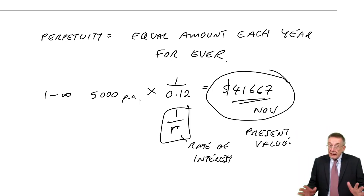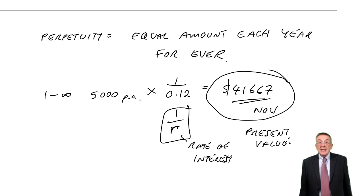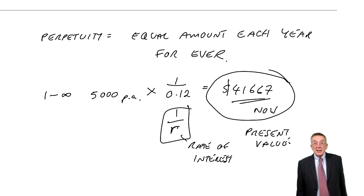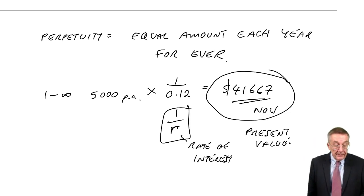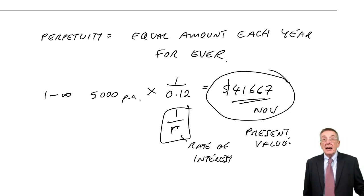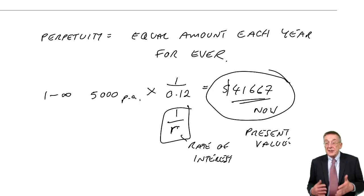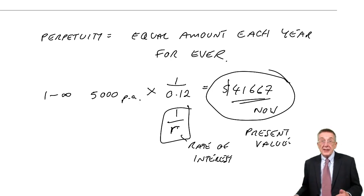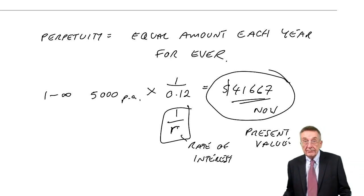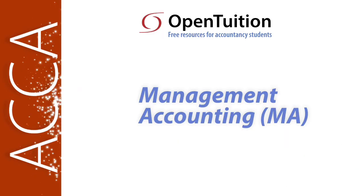Those are the techniques we need for discounting. For individual amounts we have the present value table; for an equal amount each year we have the annuity table; and for a perpetuity we multiply by 1 over r. In the next chapter I'll show you how we use these techniques in what we call investment appraisal.